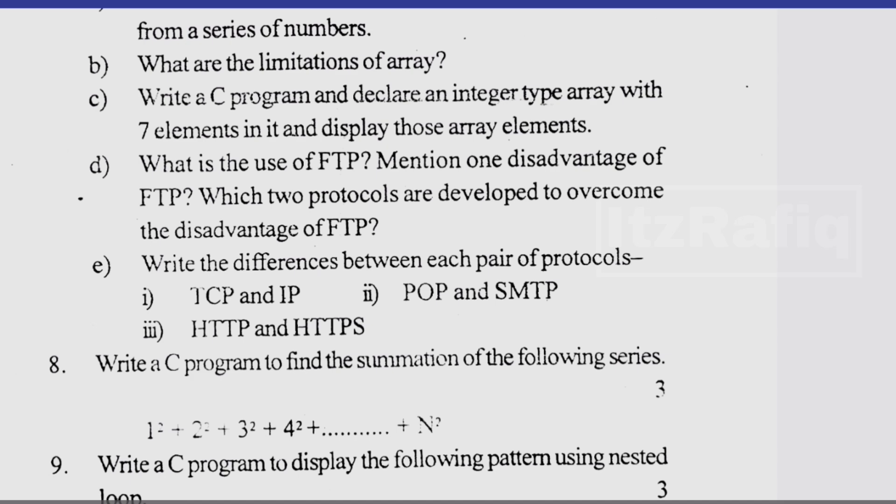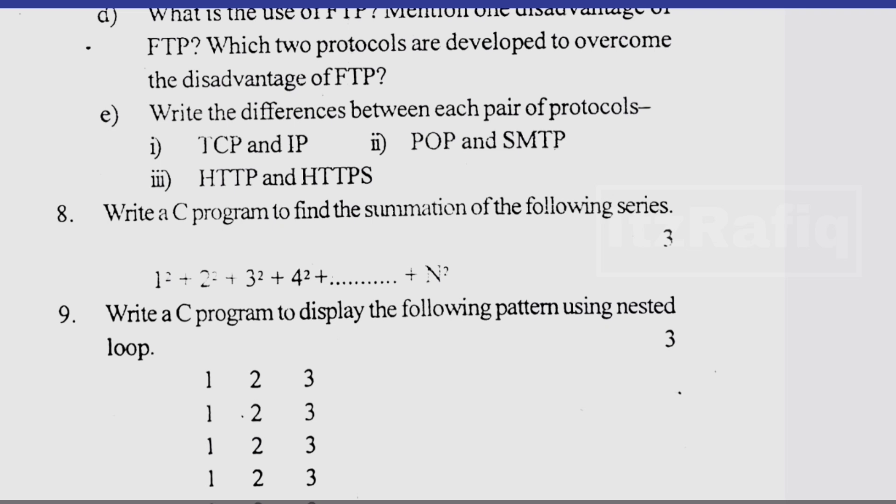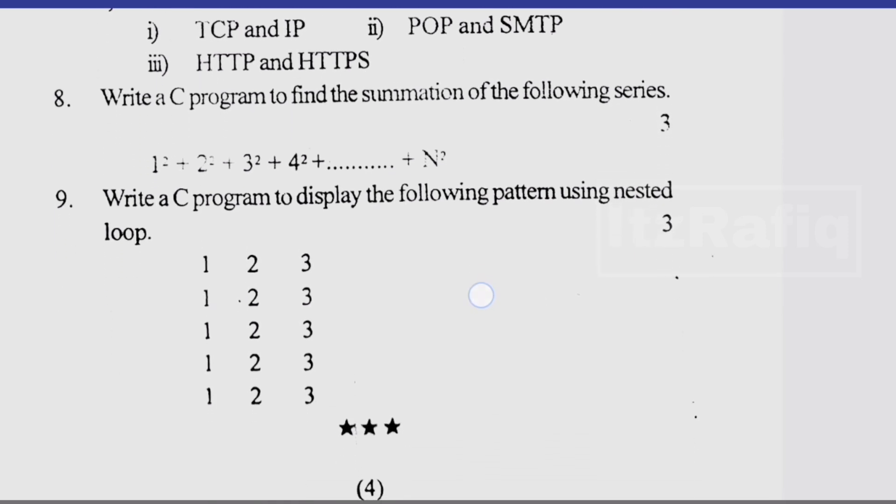As it is three marks question and there are three differences, so you can just add one point each. And this is also a program, 1 square plus 2 square, the summation of n numbers only. So I think you have written already this program. Then this program, this is easier than the number eight.